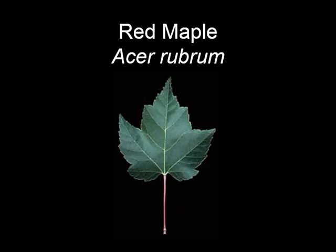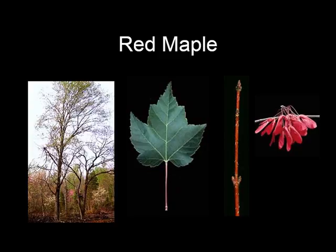The red maple has opposite branching, simple leaves with three to five shallow lobes, and it's coarsely toothed, light green above, pale green to whitish beneath, turning brilliant red in the autumn. Red maples are famous for having some red on them year-round. Found in a variety of habitats, they typically reach 50 feet high, sometimes as high as 100 feet, and grow best in wet soil. The bark is smooth and gray on young trunks and branches. On older trunks it's darker and more shaggy, roughened with long, irregular peeling flakes.